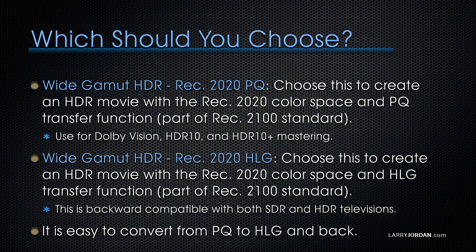Inside Final Cut X, there are three Rec. 2020 settings. Which one should you choose? There's Rec. 2020 PQ, Rec. 2020 HLG, and just Rec. 2020 in general. Don't use Rec. 2020 in general — it's a legacy format, done for Final Cut 10.3 projects only, and it should not be used. You want to use PQ to create an HDR movie with the Rec. 2020 color space and the PQ transfer function. This is good for Dolby Vision, HDR10, and HDR10 Plus mastering.